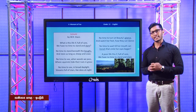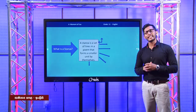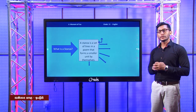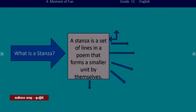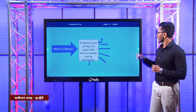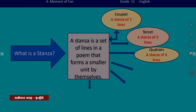So what is a stanza? A stanza is a set of lines in a poem that forms a smaller unit by themselves. Stanzas are of different types. Let me show you them one by one. If there are 2 lines in a stanza, we call it a couplet. If a stanza consists of 3 lines, we call it a tercet. If there are 4 lines in a stanza, we call it a quatrain.